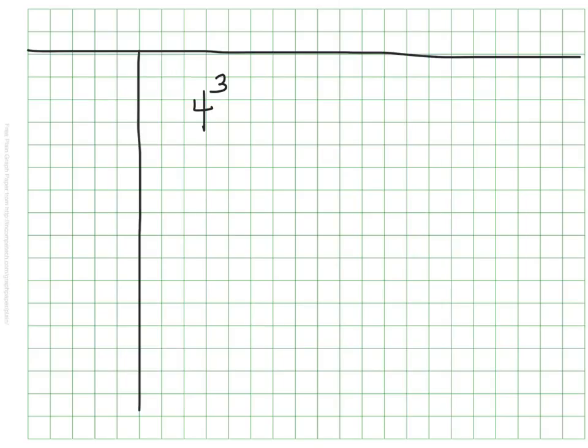4 to the 3rd power or 4 to the power of 3. Here's a common mistake. Some people see this 4 to the 3rd power as 12. Do you know where that mistake comes from? Most people, if they don't know better, might say that 4 times 3 is 12, so 4 to the 3rd power is 12.